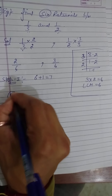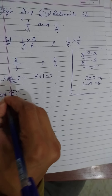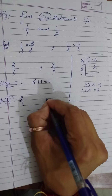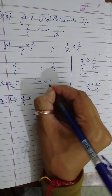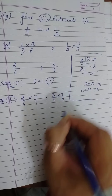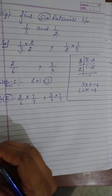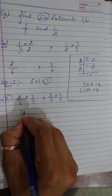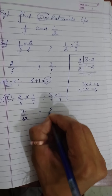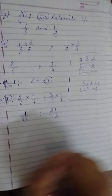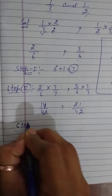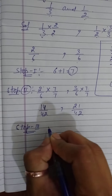Step 2: our two numbers are 2 over 6 and 3 over 6. We multiply numerator and denominator by the Step 1 value. It becomes 14 over 42 and 21 over 42. Step 3: just count the numbers between them.